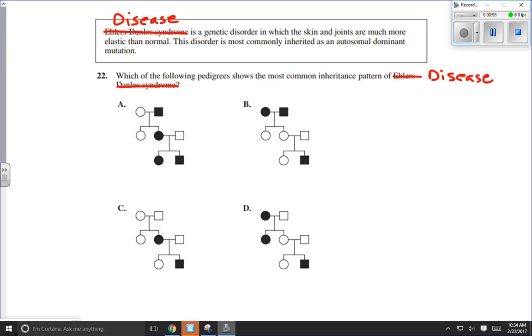Just as a reading comprehension thing. So this is a disease. It's a genetic disorder in which skin joints are much more elastic than normal. This disorder most commonly inherited as an autosomal dominant mutation. Now, if it's autosomal dominant, that's pretty important.